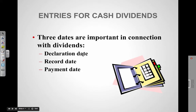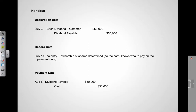So the declaration happens, then two weeks later the record date happens, and then approximately two weeks later the payment date happens — about a month in total. If you have the handout that goes with this video, this is the first part of it. This is the journal entry that would happen on the declaration date. In this particular case, on July 3rd, the corporation declared a $50,000 cash dividend.